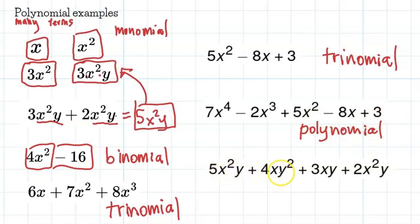And this one, we have an x squared y, an xy squared, so again, the x and y's are different, so we can't combine these. We have an xy, which is totally different, but we have an x squared y. Oh, we can combine this one and this one, so that's going to be 7x squared y, plus 4xy squared, plus 3xy. We have 1, 2, 3, so this is going to be a trinomial.